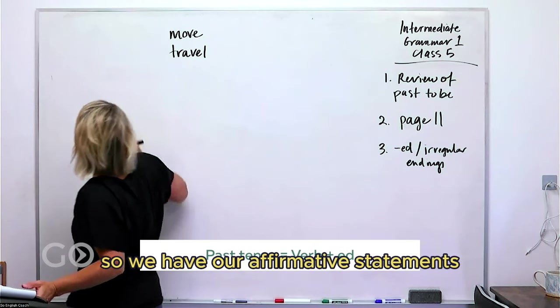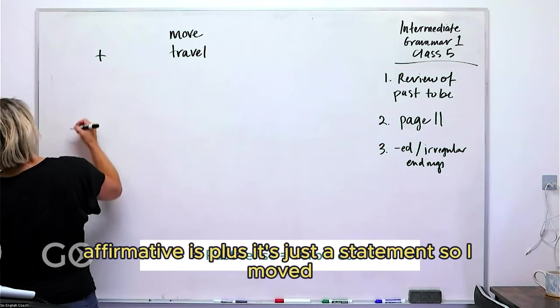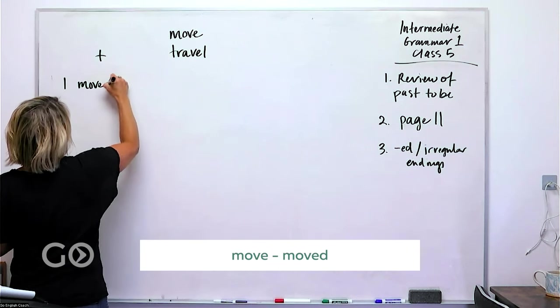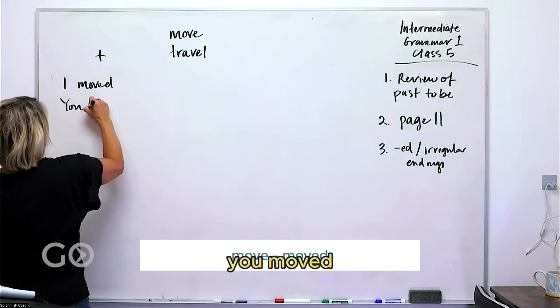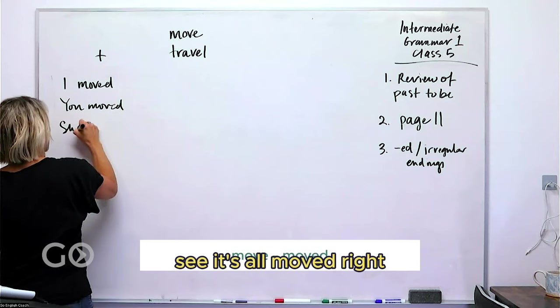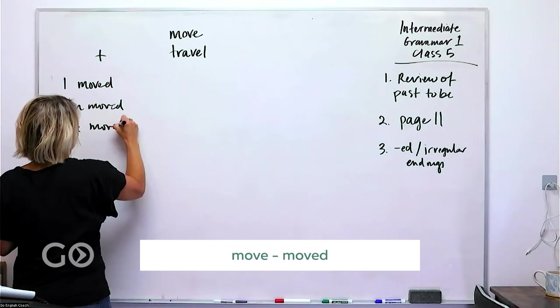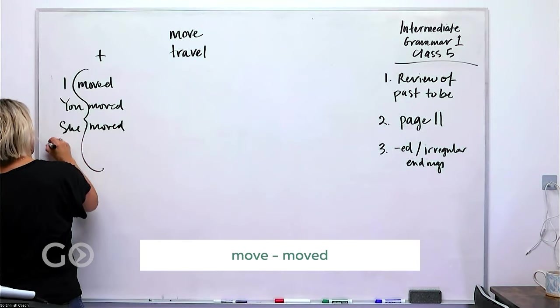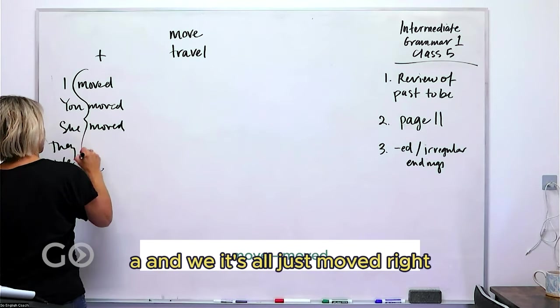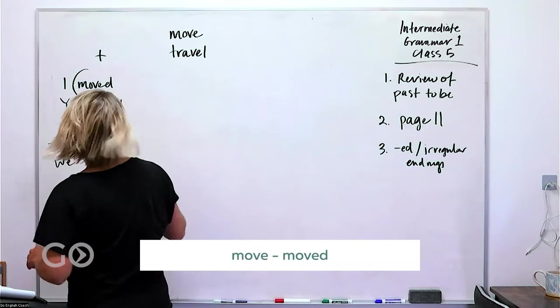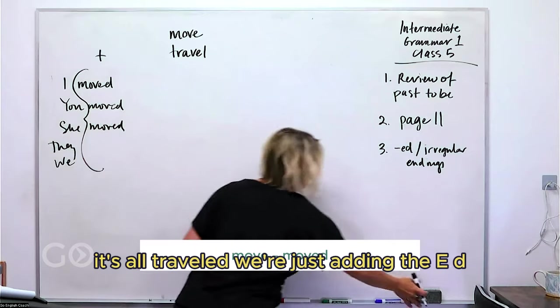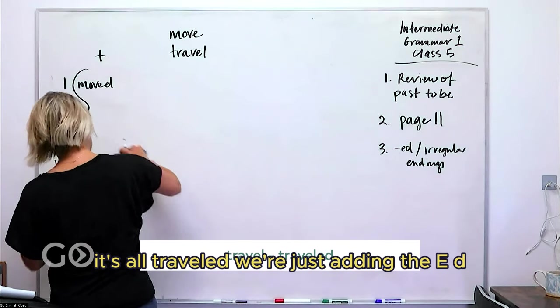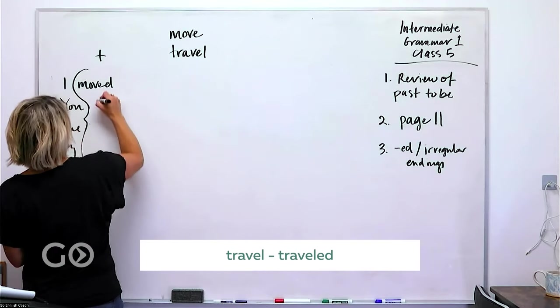Okay, those are our verbs. And let's make them in the past tense. So we have our affirmative statements—affirmative is plus, it's just a statement. So I moved, you moved, she moved—it's all moved, right? They and we, it's all just moved, traveled. We're just adding the ed.